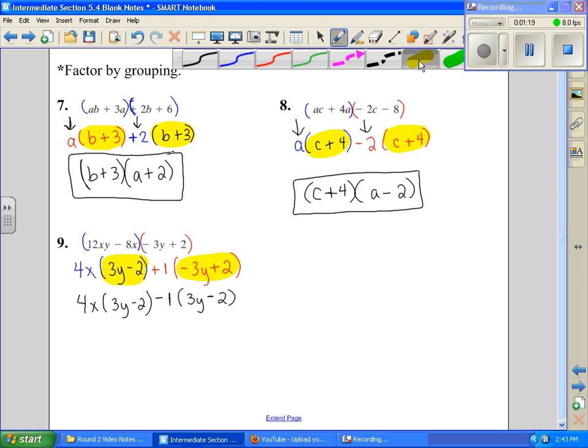So now when I check them, I have 3y minus 2, 3y minus 2, and that fixes the problem. So now that becomes one of our factors, and what's left on the outside becomes the other. So 4x minus 1.